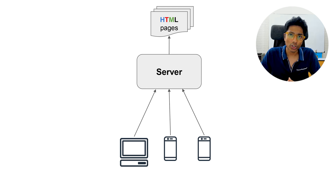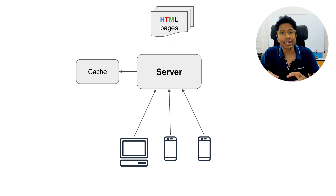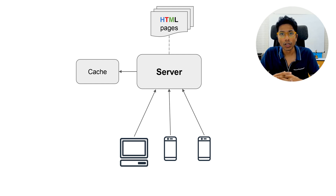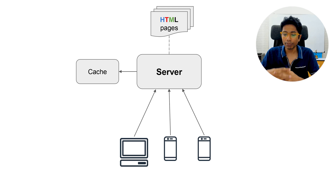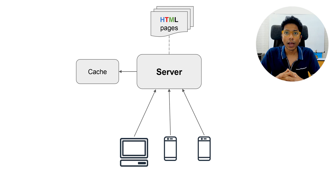Since serving pages is a common operation, you want to do it quickly. One concept in computer science you can use is caching. You can keep the web pages in memory, or keep them in local storage itself instead of a distributed file store. When a person asks for a page, you just return it quickly.